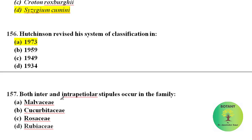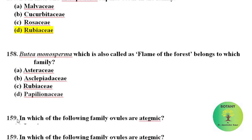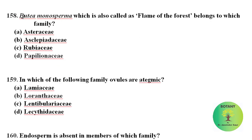Both inter and intra petiolar stipules occur in family Rubiaceae. Inter and intra petiolar type of stipules occur in family Rubiaceae. Butea monosperma, which is also called the flame of forest, belongs to family Papilionaceae.